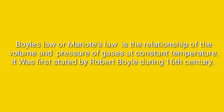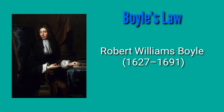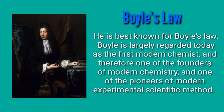It was first stated by Robert Boyle during the 16th century. The complete name of Robert Boyle is Robert William Boyle. He is best known for Boyle's Law. Boyle is largely regarded today as the first modern chemist and therefore one of the founders of modern chemistry and one of the pioneers of modern experimental scientific methods.